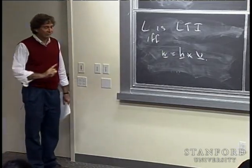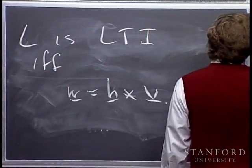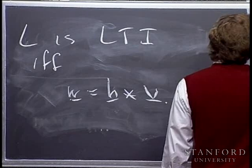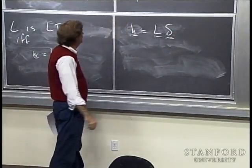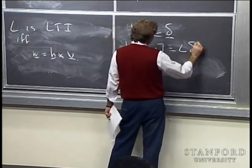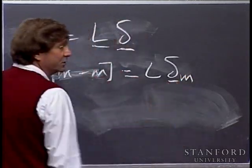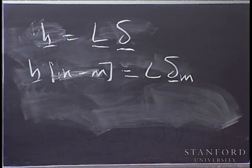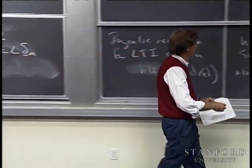Here, H is the impulse response, V is the input vector, and W is the output vector. H is L of delta — the unshifted delta function — and h(m minus n) is L of the delta function shifted to m. The matrix A that realizes the linear system has a special form in the case of a time-invariant system. It's cute, and actually very important in a number of applications.